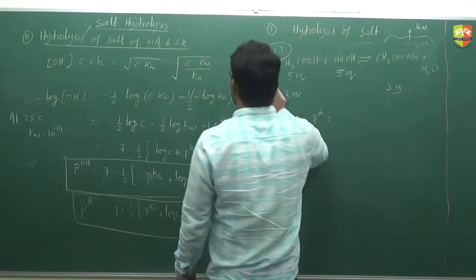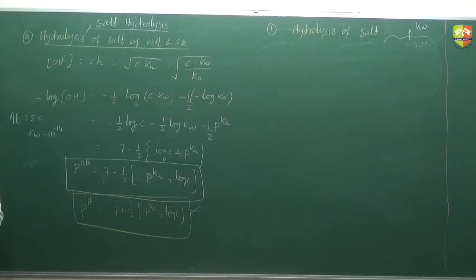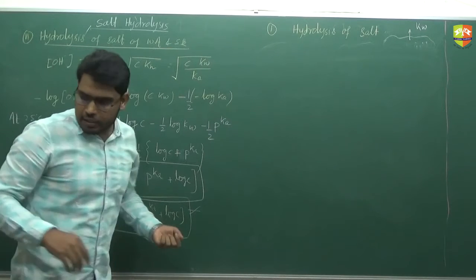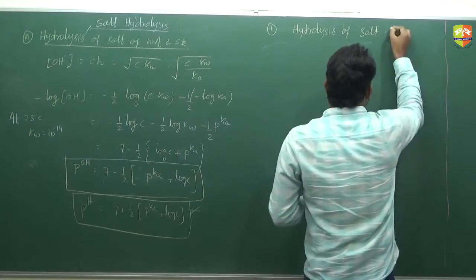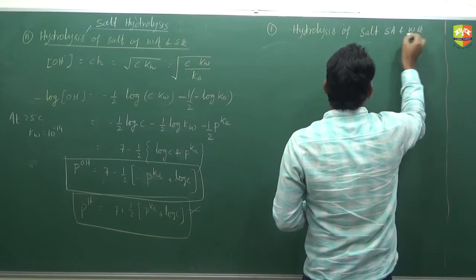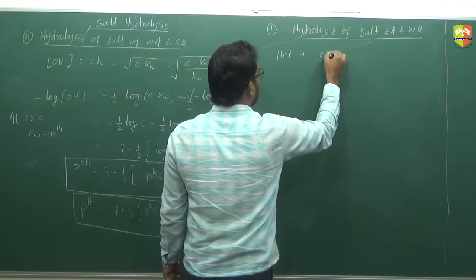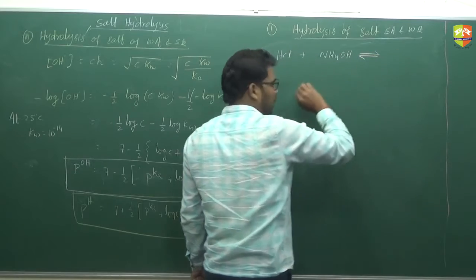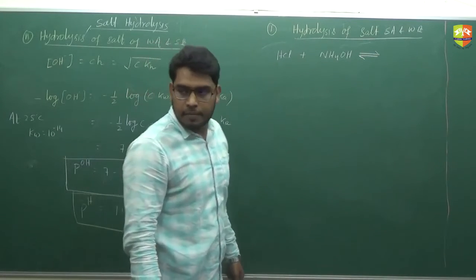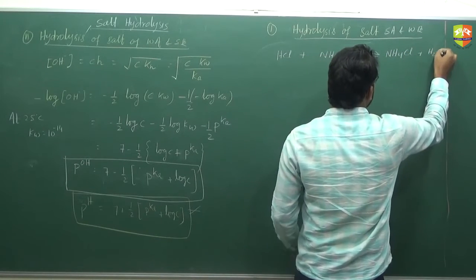Next, write down hydrolysis of salt of a strong acid and weak base. Can you derive this expression? For salt of a strong acid and weak base, the reaction is HCl plus NH4OH. The weak base reaction is reversible because hydrolysis is possible, giving NH4Cl plus H2O.